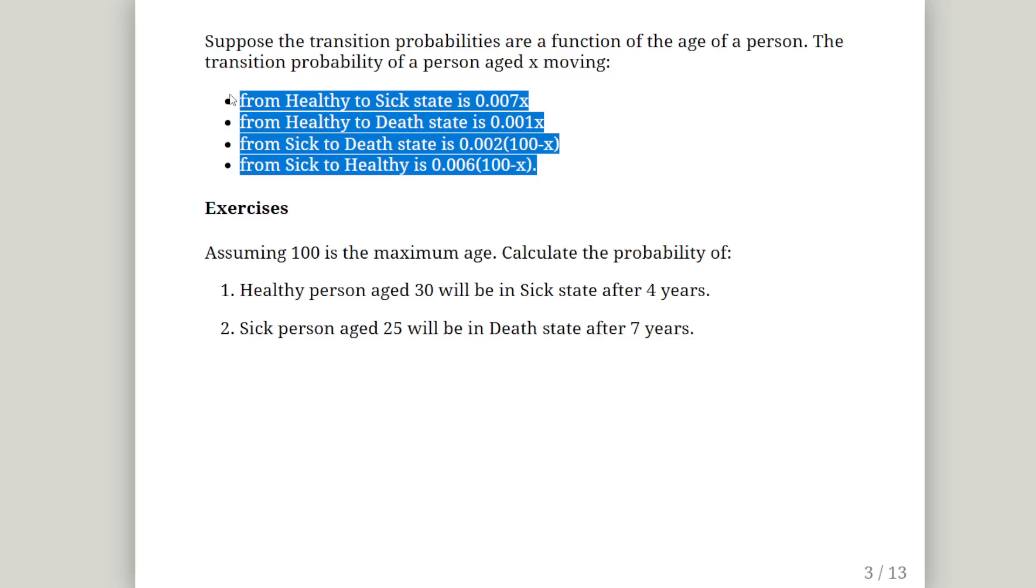Now assuming that 100 is the maximum age, calculate the probability of a healthy person aged 30 - what's the probability that they will be in a sick state after four years? And then a sick person aged 25, what is the probability that they will be in a death state after seven years?